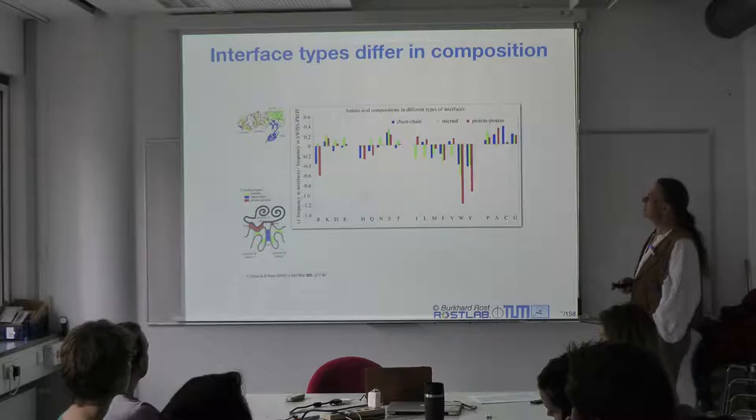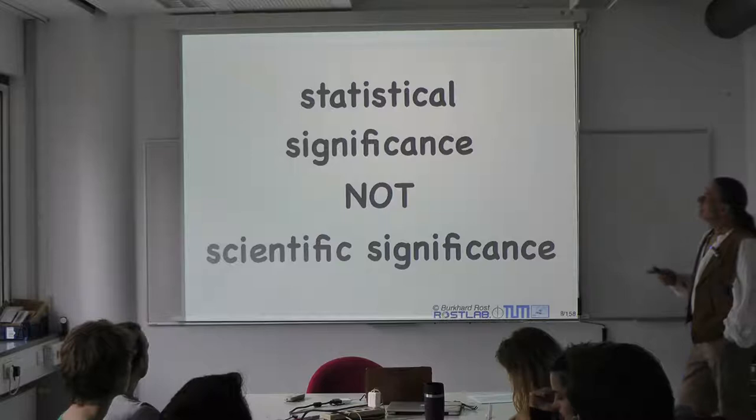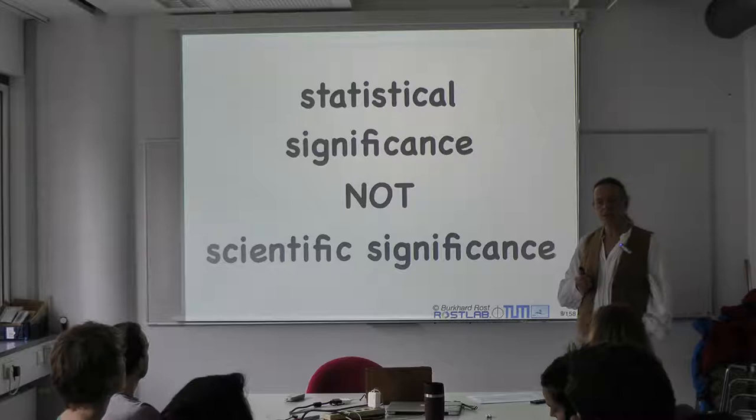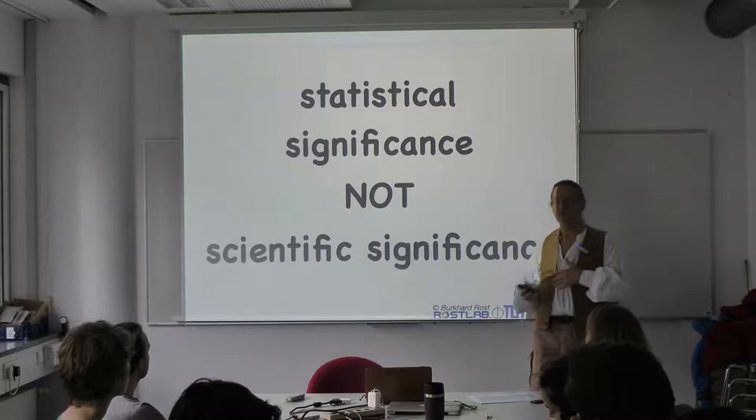In fact, we can even say that the differences are between six different types of interfaces. What we can establish, however, is that the differences are statistically significant, not scientifically significant. Scientifically significant ultimately implies that we can use it for something — that we can apply this, or gain from this tool that we've developed, for instance as a prediction method or statistical method.